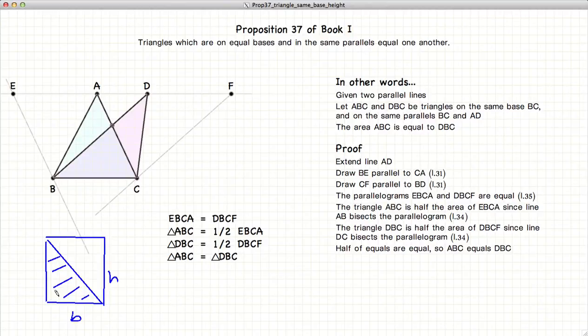From this proposition that we have just demonstrated here, if we take any triangle who has the height equal to our original parallelogram or our original rectangle, this triangle will also equal one half the base times the height.